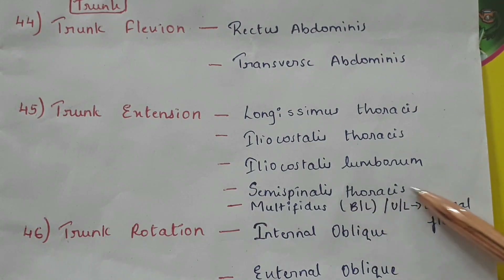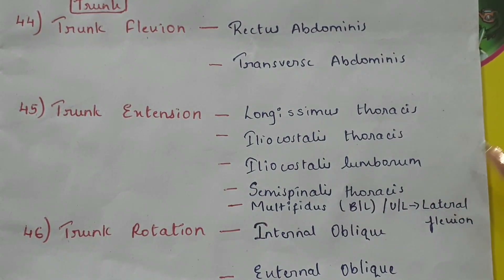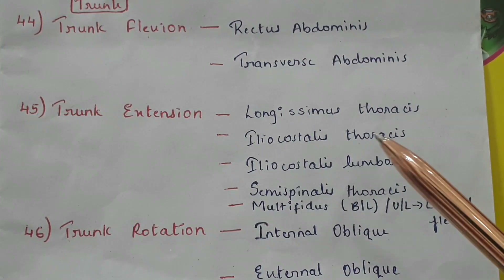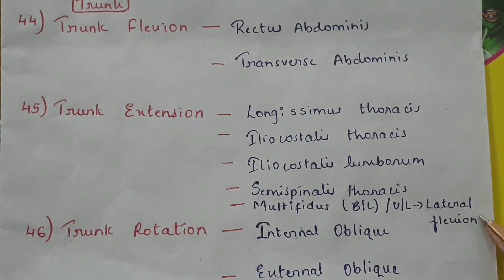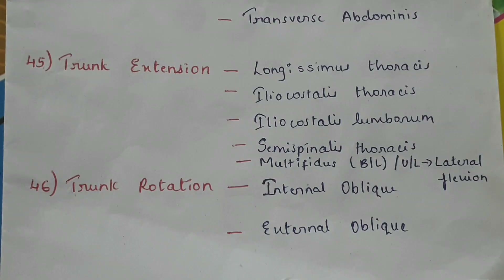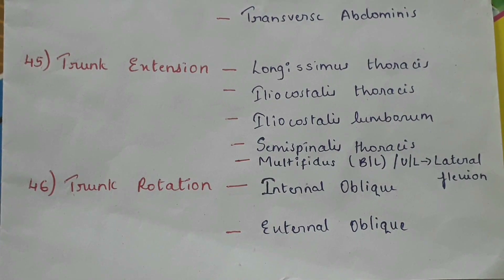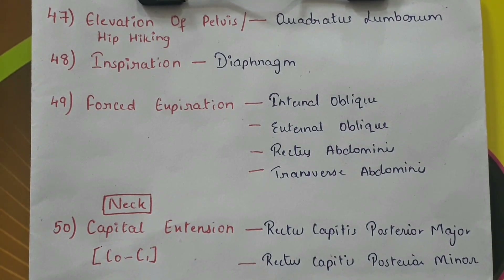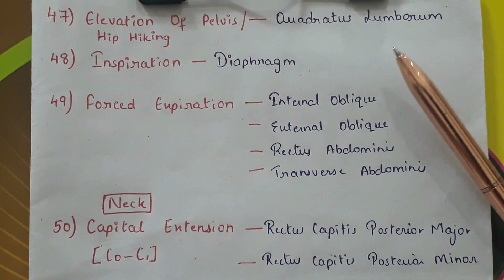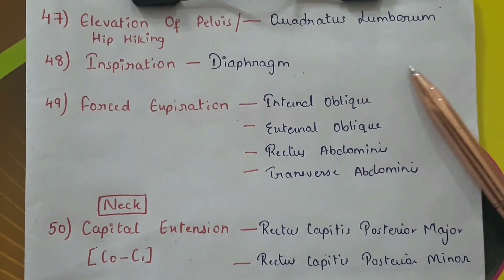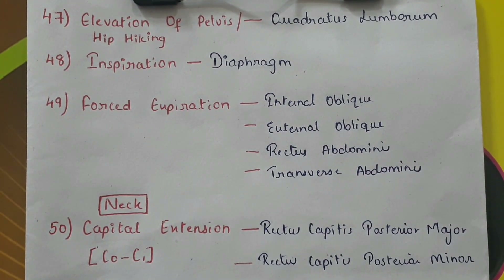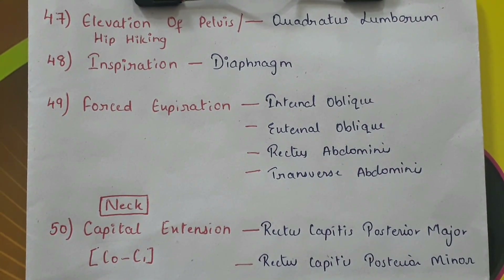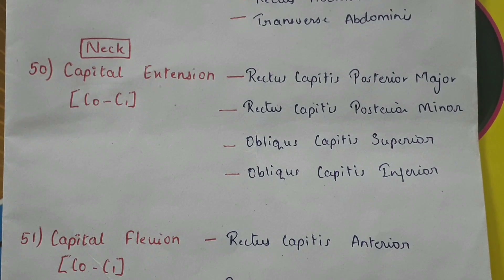Trunk extension by longissimus thoracis, iliocostalis thoracis, semispinalis thoracis, and iliocostalis lumborum. Bilaterally the multifidus also helps in trunk extension, and unilaterally it helps in side flexion or lateral flexion. Trunk rotation by the internal oblique and the external oblique. Elevation of the pelvis, also called hip hiking, by the quadratus lumborum. Inspiration by the diaphragm; forced expiration by the internal oblique, external oblique, rectus abdominis, and transverse abdominis.